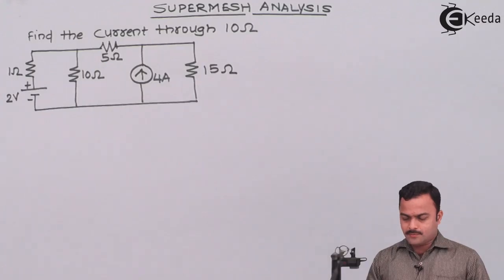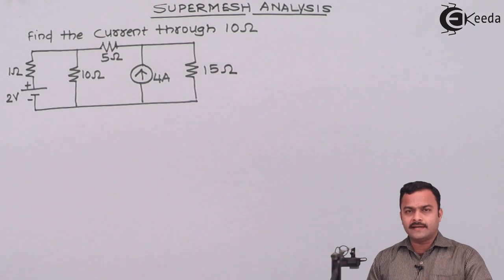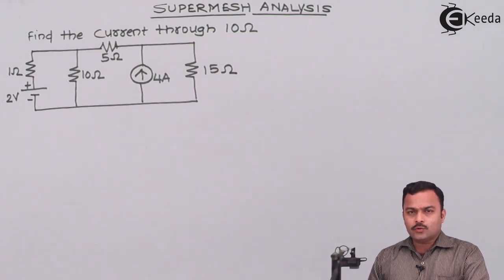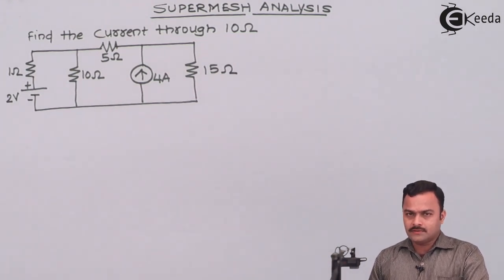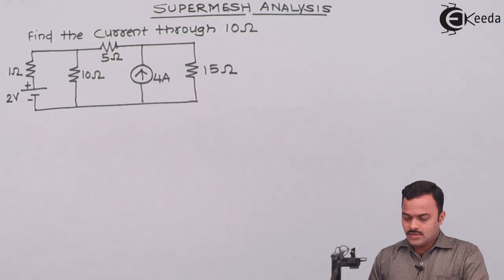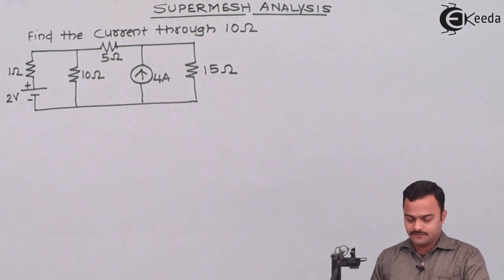So here is the problem of a super mesh analysis. But how to identify it's a super mesh? Let us see how. So in this problem, we have to get a current flow into 10 ohm resistor using a mesh analysis technique.